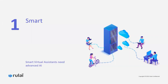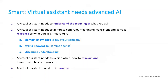First: Smart. We believe smart virtual assistants need advanced AI in order to be smart. The AI assistant must behave according to certain normal conventions of human interaction in order to be understood and useful. AI workers need to understand the meaning of the user — the structure of the sentence, the subject matter, and the context. Based on that understanding, the virtual assistant needs to generate a coherent, meaningful, consistent, and correct response to what a user asks.